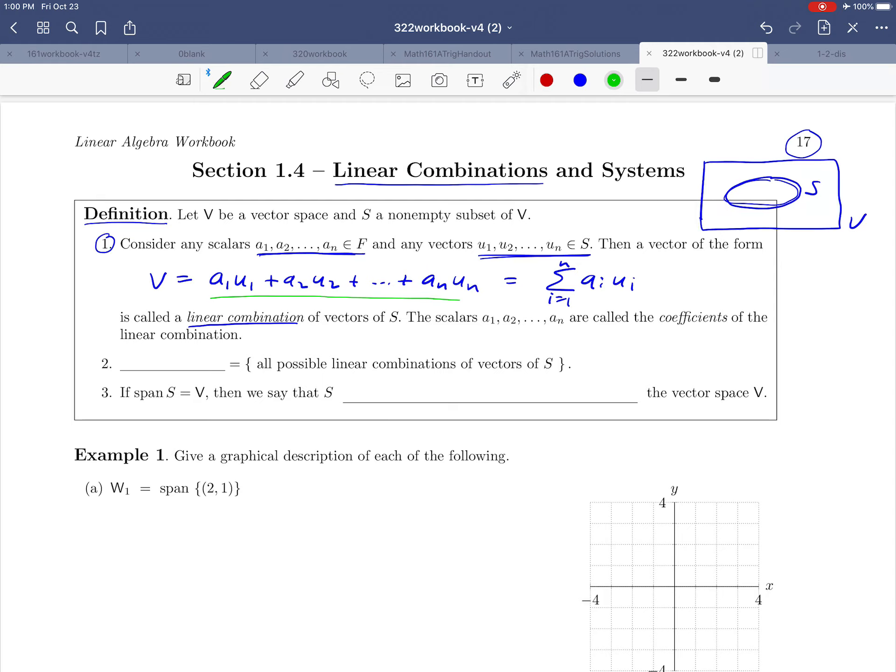And then continuing with the statement here, there's a name for the scalars. They're just called the coefficients of the linear combination. I'm just going to kind of periodically erase so we don't get too cluttered here. So that's the first part of our definition.